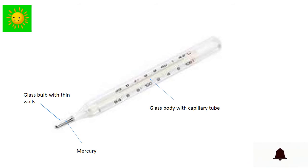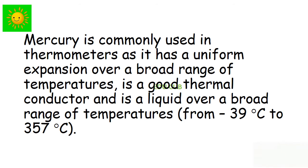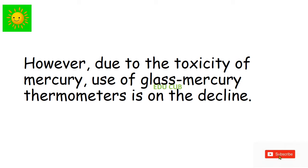Mercury is commonly used in thermometers as it has a uniform expansion over a broad range of temperatures, it is a good thermal conductor, and it is a liquid over a broad range of temperatures. However, due to the toxicity of mercury, use of glass mercury thermometers is on the decline.